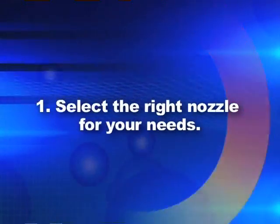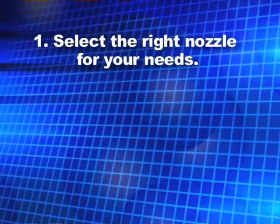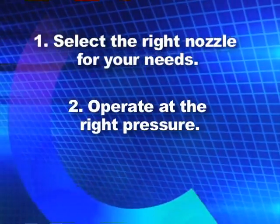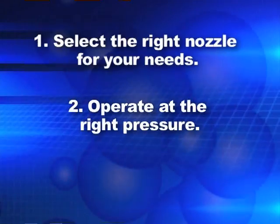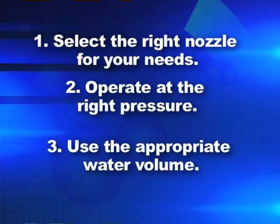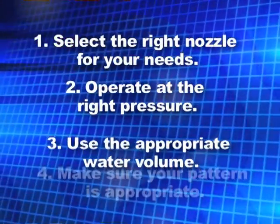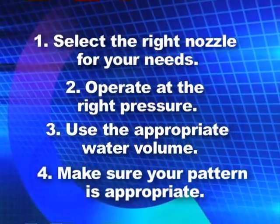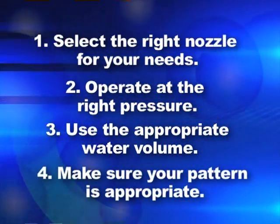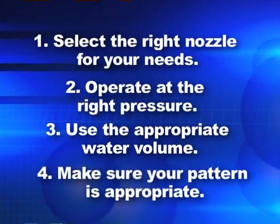In conclusion, the air-induced low-drift nozzle can be successful if you follow these four rules. First, spend some time selecting the right nozzle for your needs — consult with an expert. Second, make sure you operate the nozzles at the right pressure; often that means a higher pressure — 60, 80, or 100 psi is not uncommon. Third, use the appropriate water volume; if you go to a coarser spray, you may have to increase your water volume slightly. And finally, make sure your pattern is appropriate — often we need a wider, larger overlap underneath the boom compared to a conventional nozzle. Our research indicates that if you follow these four rules, you will be successful using your pesticides and protecting the environment.